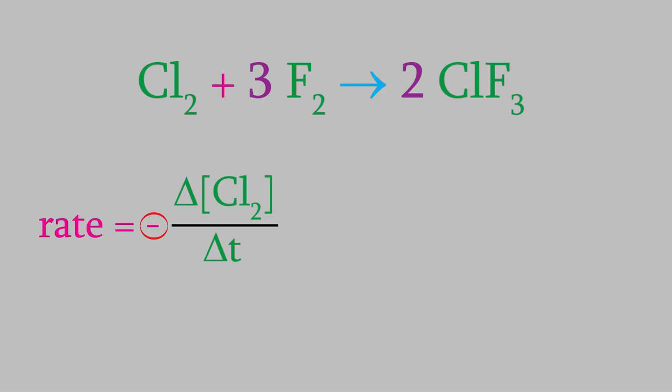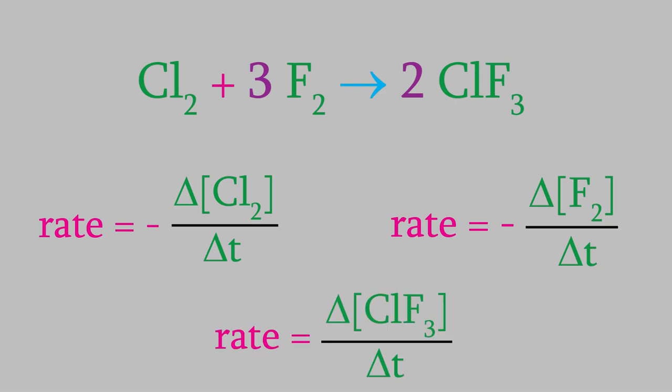We get a similar equation for the fluorine. Meanwhile, if we determine the rate using chlorine trifluoride, we get this equation. But think about the reaction for a minute. The coefficients tell us that one mole of chlorine reacts with three moles of fluorine. In the equations we've written, the concentration of fluorine will change three times faster than for chlorine. So, the rate with respect to fluorine will be three times faster than for chlorine. Meanwhile, the rate with respect to the chlorine trifluoride will be two times faster than for the chlorine.